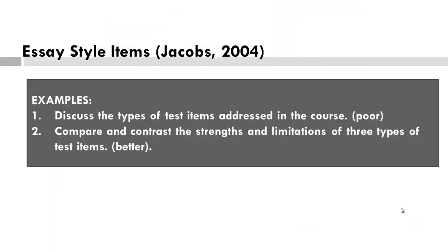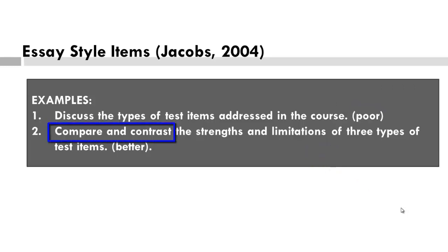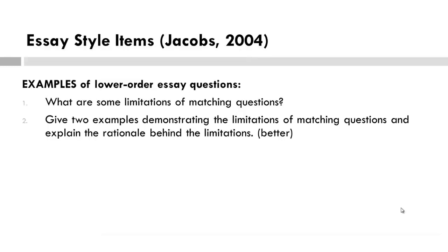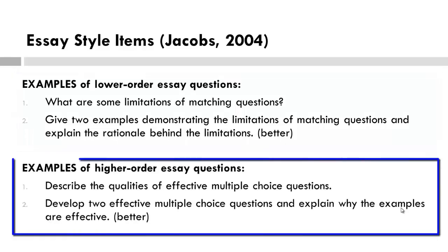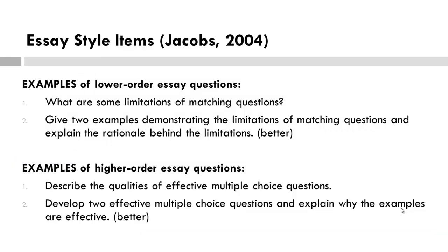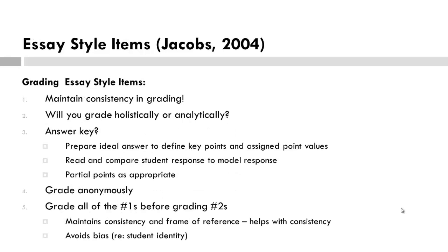Here are some examples. Why is the first example a poor example of an essay style question? How is number 2 better? Consider higher order cognitive processes like compare and contrast rather than identify or list. Essay style items could also include lower and higher order thinking skills. Consider what learning objectives underpin these two questions. These are all things to consider. Here is a summary compiled from Jacob's work — please pause to consider this and the following slide.